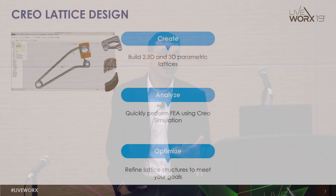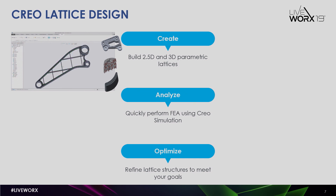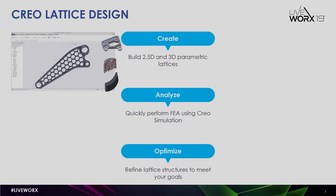In Creo 4, we started to build out our design tools, introducing capability to build rich lattice structures directly inside Creo. We introduced the new lattice feature, allowing you to build 2.5D and 3D lattices as parametrically controlled features directly inside Creo. Because they're directly inside Creo, we can use our analysis tools to go and analyze those components, those features, that geometry.